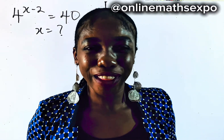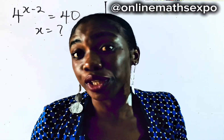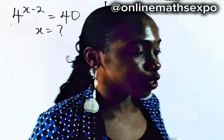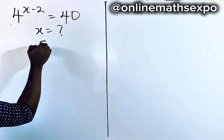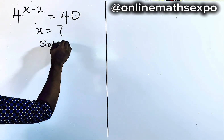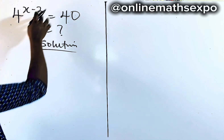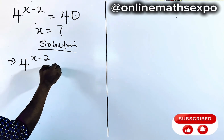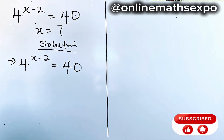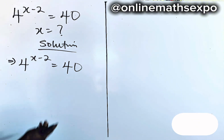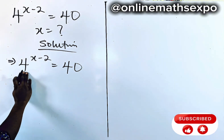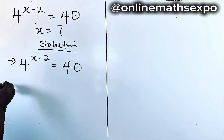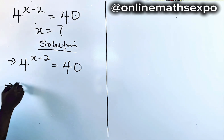Hello, beautiful one. Let's solve this beautiful equation together — it's so easy. Let's do this together. So we're going to begin with our solution. Look at what we have: 4 to the power of x minus 2 is equal to 40. Now, 40 cannot be expressed in powers of 4, so what we should do is just take log of both sides.